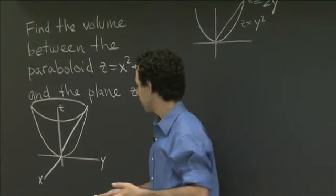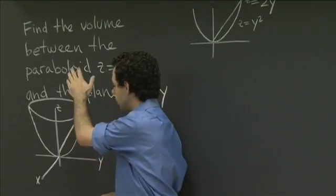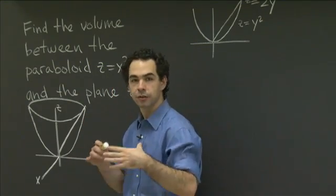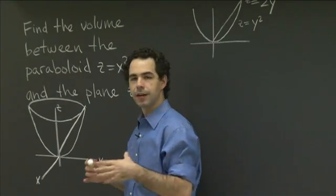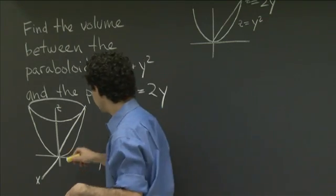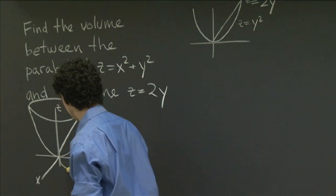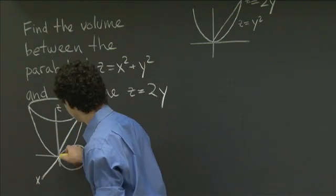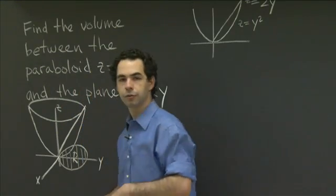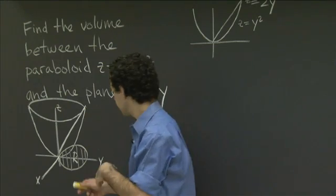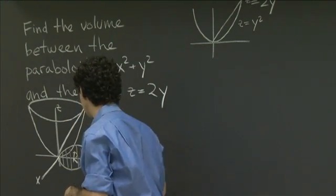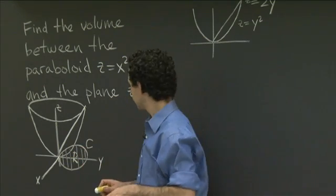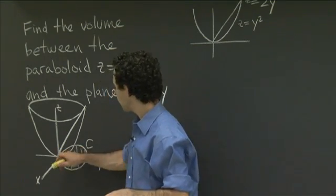How can we bound x in terms of y, or y in terms of x? Or should we use cylindrical coordinates? In order to do that, we need to figure out: when you project this region down, when you flatten it along z and look at its shadow — its footprint in the xy-plane — what does that region look like? So somehow we project down, and there'll be some region R down here. That region will be the projection of this solid region down, and it has some boundary curve C.